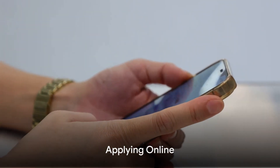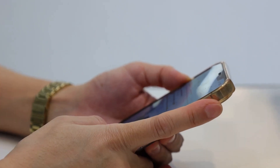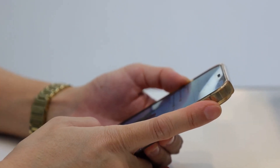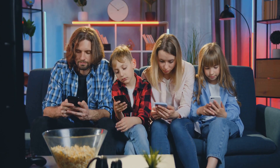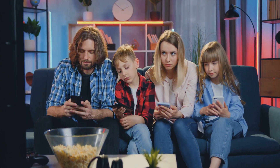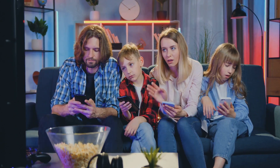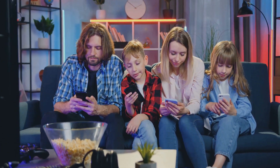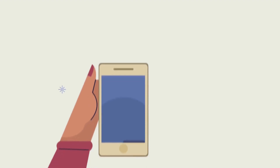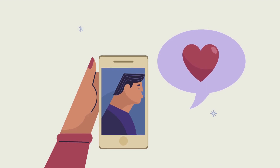Once you've determined you're eligible, the next step is to apply. Simply visit the Safelink website and click on the Apply button. You'll need to provide some basic information including your name, address, and details about your household income or the assistance programs you participate in. Remember, honesty is the best policy — providing false information can lead to penalties or disqualification.